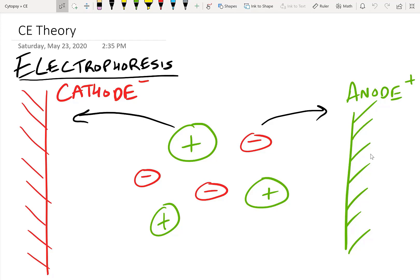Here we've got a solution that has positive and negative charges. In electrophoresis, an electric field causes a cathode and an anode to exist. Positive ions inside the solution go towards the cathode, which is negatively charged, and negative ions inside the solution go towards the anode, which is positively charged.